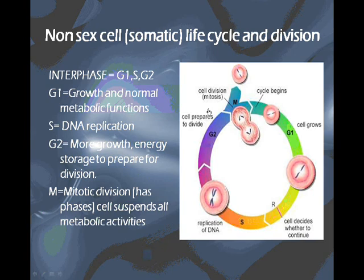The life cycle of a cell is referred to as the cell cycle. As the cell progresses through its life stages, each of those stages has a name, and there are specific things that happen during each of those phases.